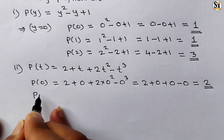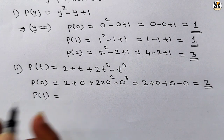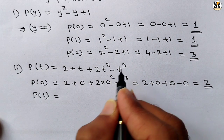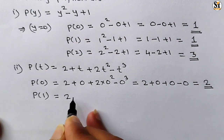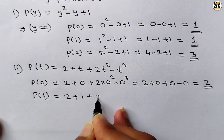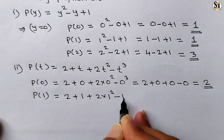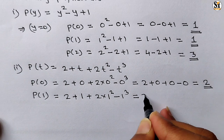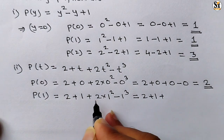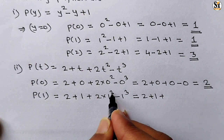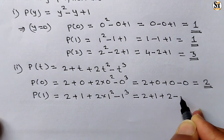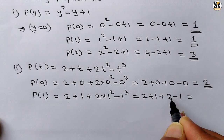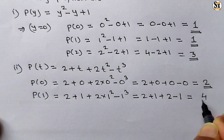In the second case, p(1) means put the value of variable as 1. So 2 plus 1 plus 2 into 1² minus 1³. Simplifying: 2 plus 1 plus 2 into 1 minus 1. That gives 2 plus 1 is 3, plus 2 is 5, minus 1 is 4. So our answer is 4.